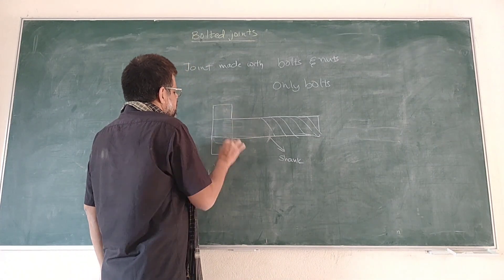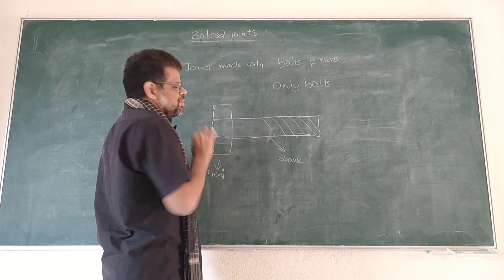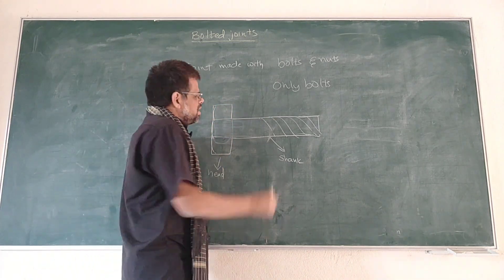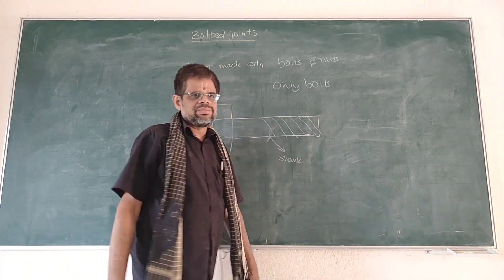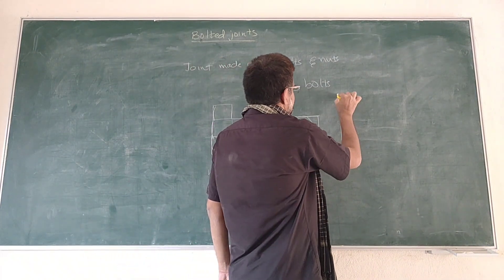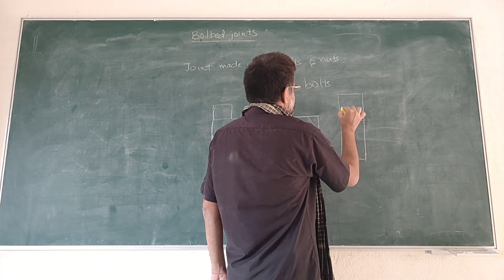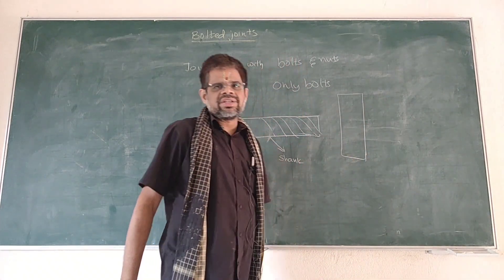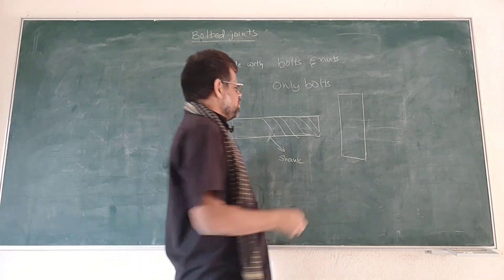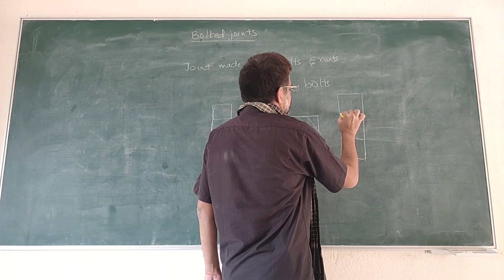Now here we have another member called the nut. This nut is a cylindrical component which consists of a hole. This hole is also a threaded hole.